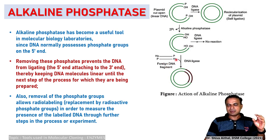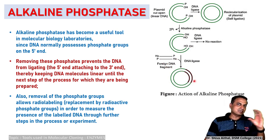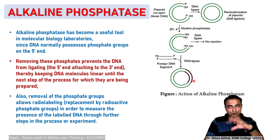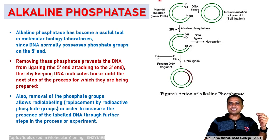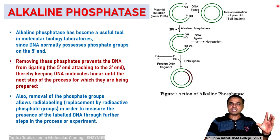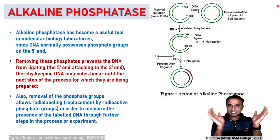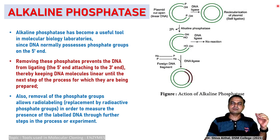Once the foreign DNA fragment is introduced and you add DNA ligase, it is perfectly sealed and you have a chimera — a recombinant DNA ready for cloning. You can introduce it into a host. Alkaline phosphatases have become a very useful tool in molecular biology laboratories because DNA normally possesses phosphate at both ends and can self-ligate.